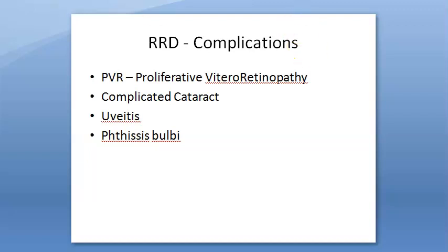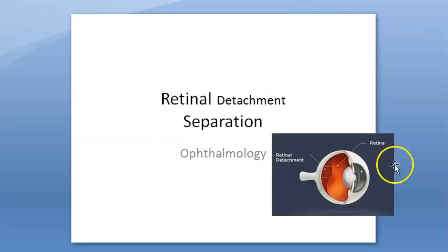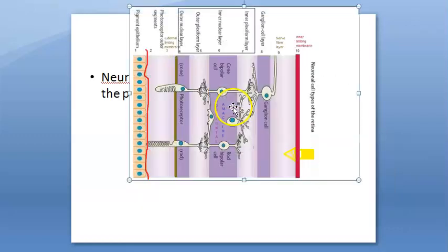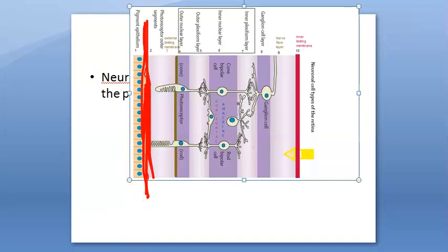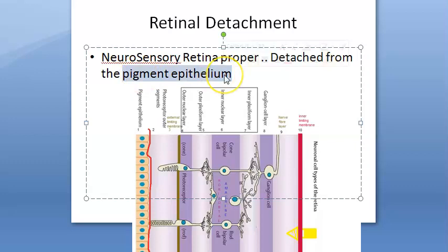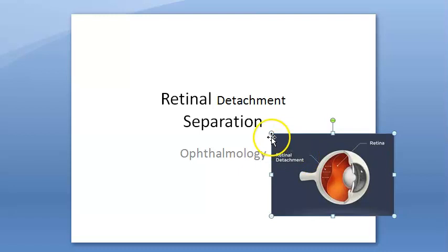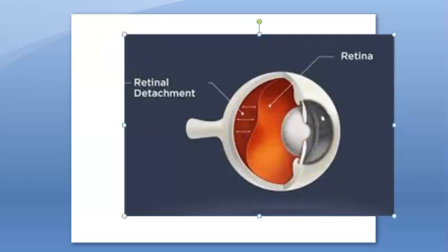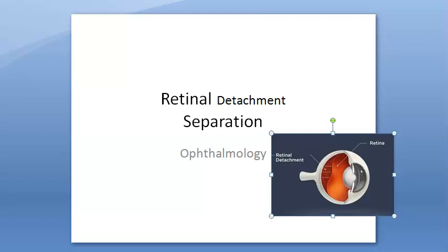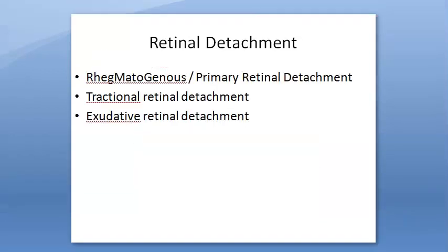In this video, let us look at the complications and treatment of regmatogenous retinal detachment. First, a recap of what we have seen so far. In the layers of the retina, between the pigment epithelium and the other layers, a gap will form — this is the retinal separation or retinal detachment. The pigment epithelium gets detached from the neurosensory retina.